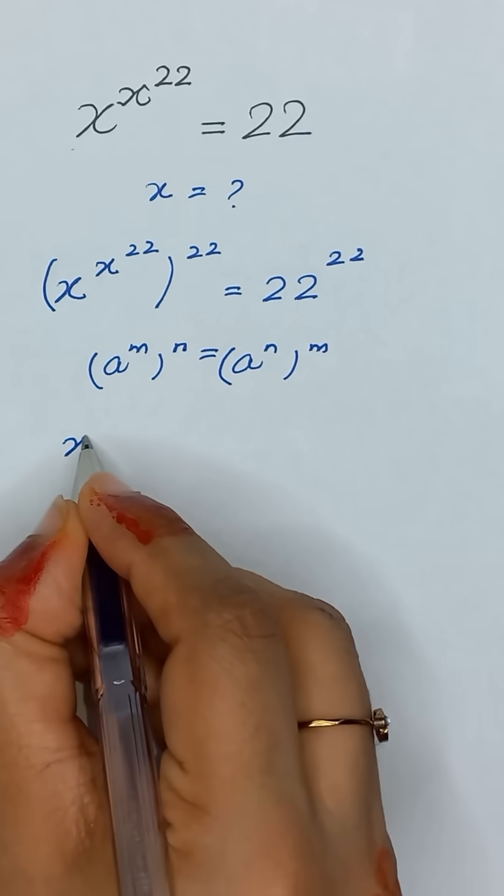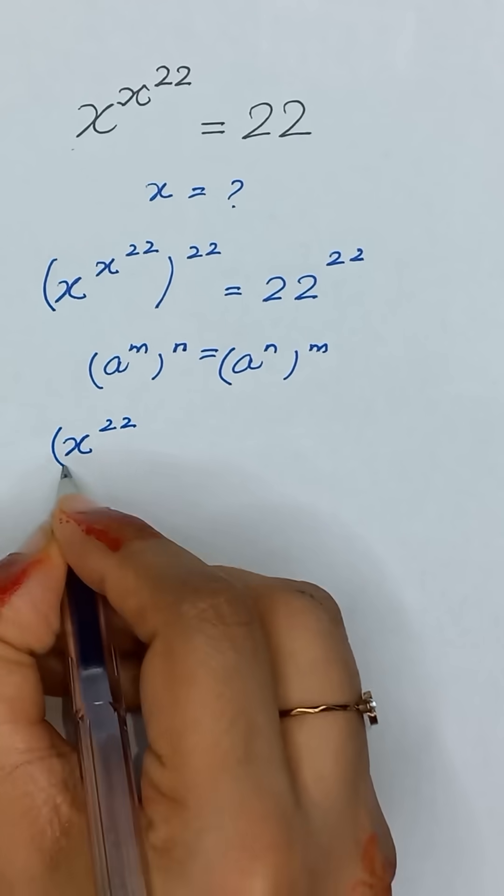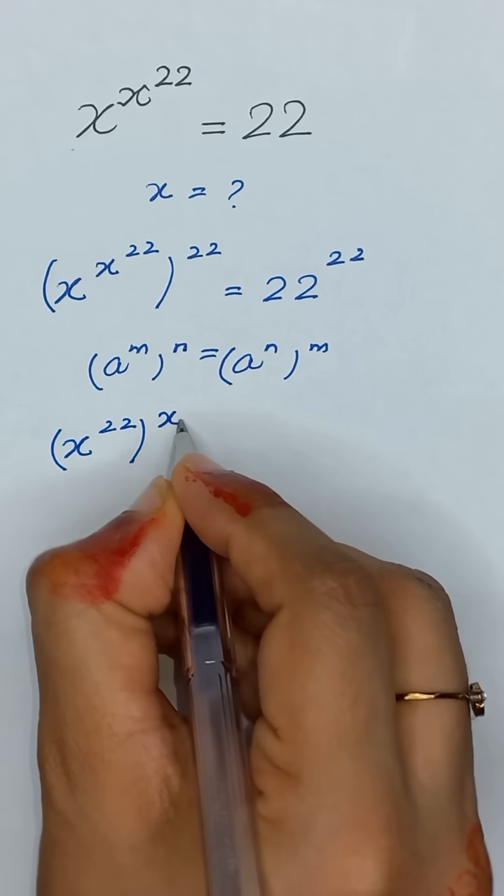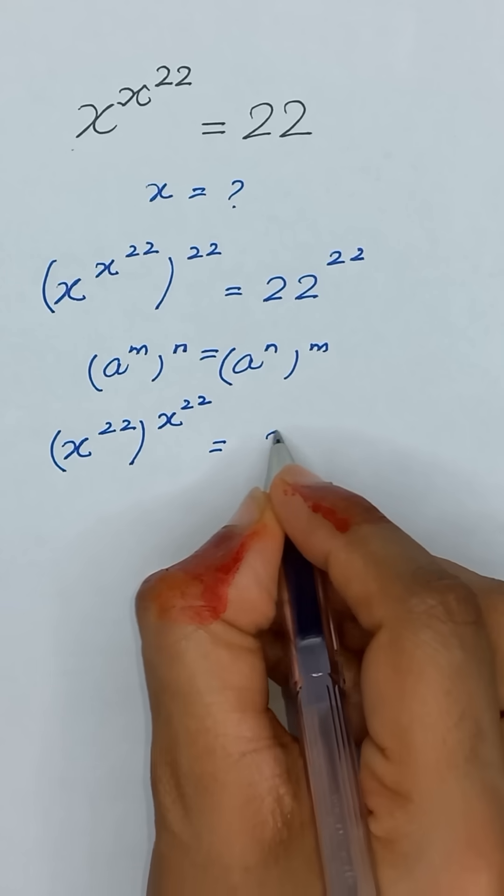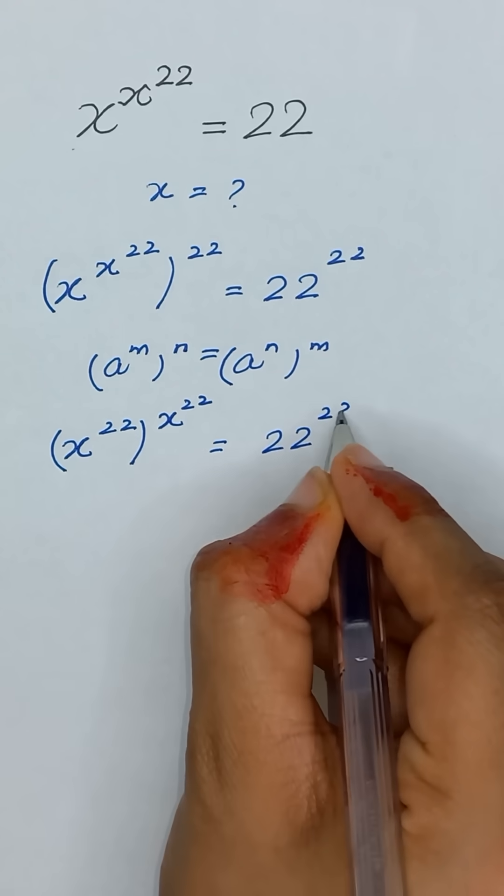So it can be written as x to the power 22 and its power x to the power 22 is equal to 22 to the power 22.